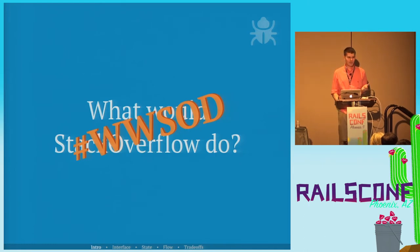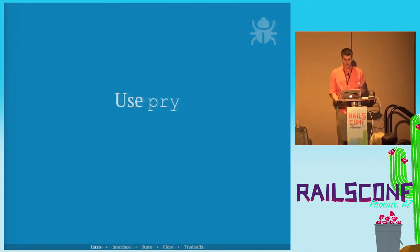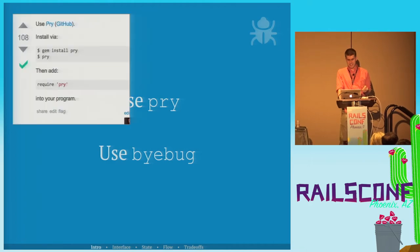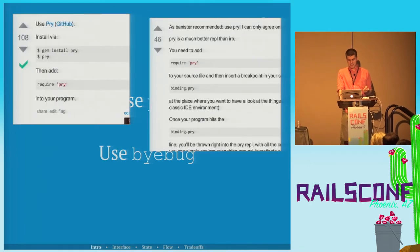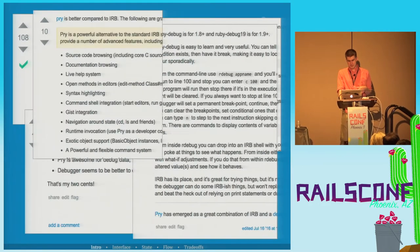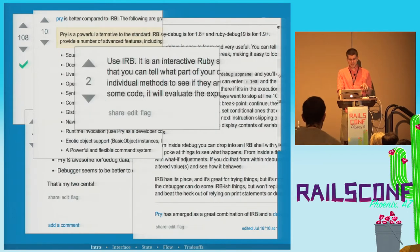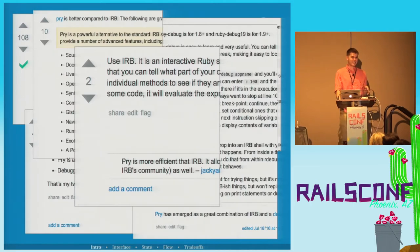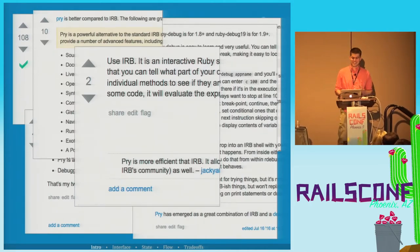Stack Overflow says to do two things: use pry and use byebug. Stack Overflow really likes to suggest using these tools all the time. I especially like when it says use IRB, and then the first comment is 'pry is more efficient than IRB.' Just because, I guess.